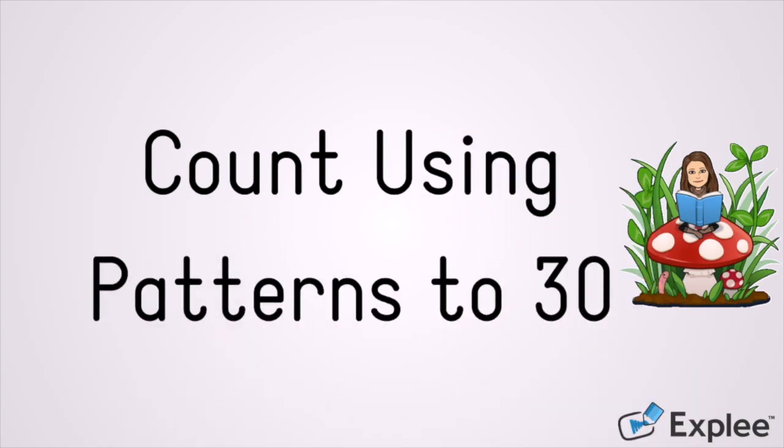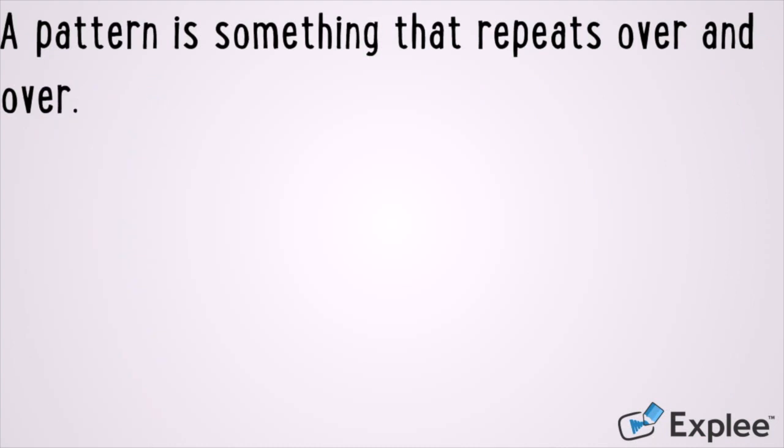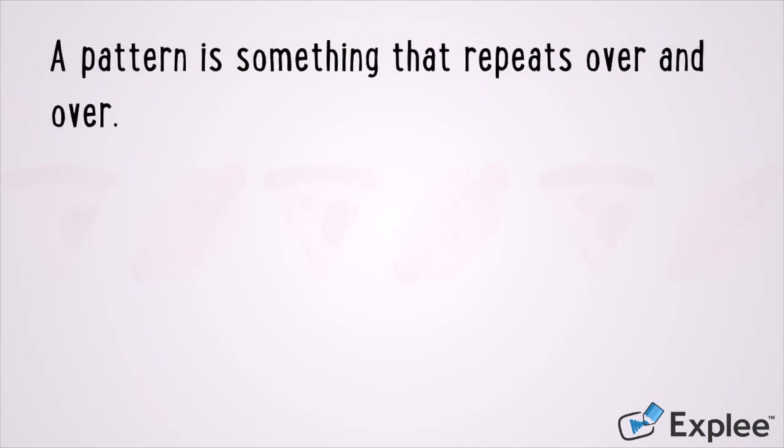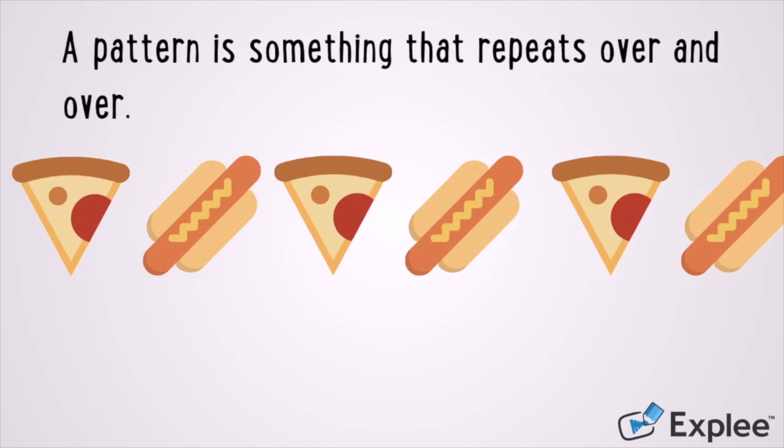But before we talk about patterns to 30, we need to review what is a pattern. A pattern is something that repeats itself over and over. In this picture below we have pizza, hot dog, pizza, hot dog, pizza, hot dog. In this pattern, pizza and hot dog are repeating themselves over and over.